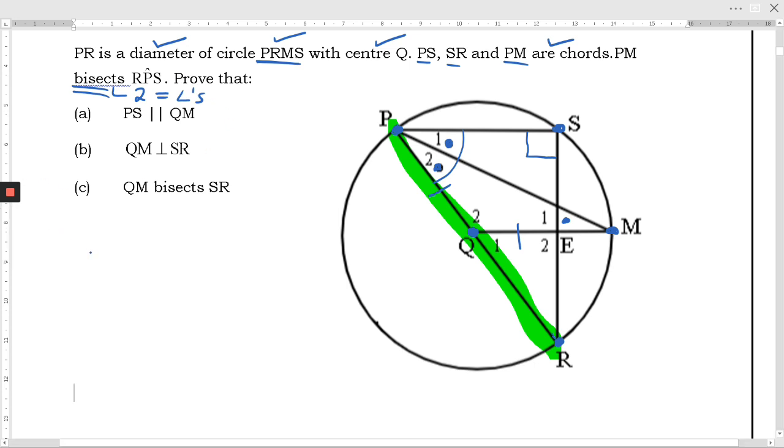Now we notice a change in the way that the questions are structured because they start saying prove that not find what angle R is equal to. It's prove that. Okay so the first thing I've got to do is I've got to prove that PS is parallel to QM. Right that didn't come up. I didn't find anything like that. How would I prove parallel lines?